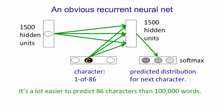It's a lot easier to predict 86 characters than 100,000 words. So it's easy to use a softmax at the output. We don't have the problem of a great big softmax.